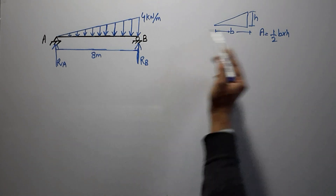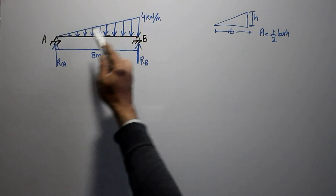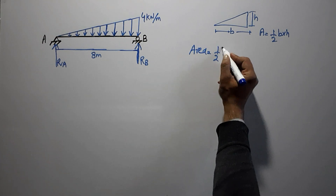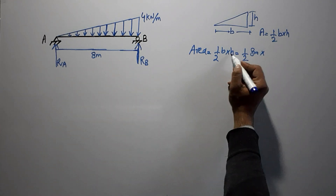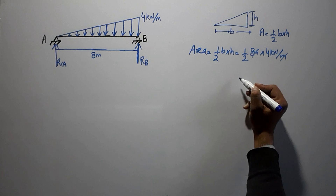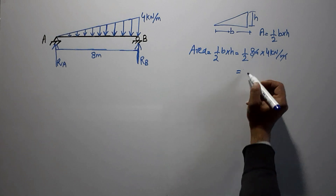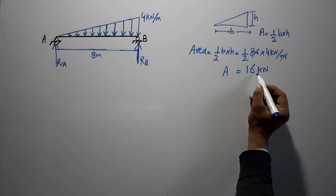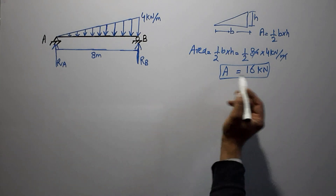This triangle has a base of 8 meters and a height of 4 kN/m. So the area equals half times 8 times 4 kN/m — the meter units cancel — giving us 16 kN. Therefore, 16 kN is the total equivalent load acting on this beam.